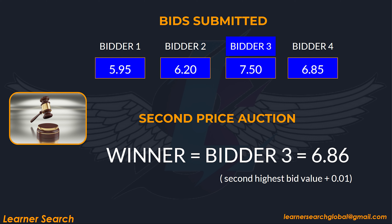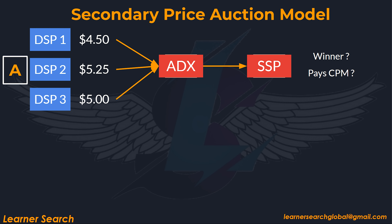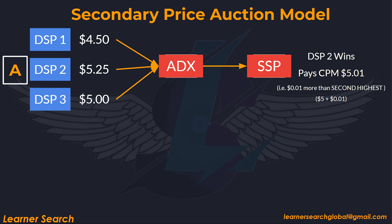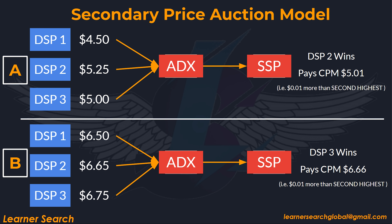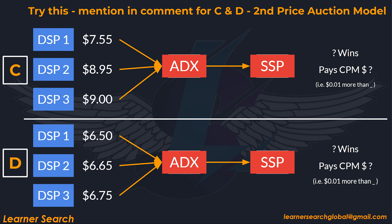Let's understand with a couple of examples. As shown here, in section A, DSP2 wins the auction and pays the second highest bid plus $0.01, totaling $5.01. Meanwhile, in section B, DSP3 pays $6.66 — the second highest bid plus $0.01 — which is also known as the clearing price. Now pause this video and write down your answers in the comment section for sections C and D. Let's see how sharp your auction knowledge is.